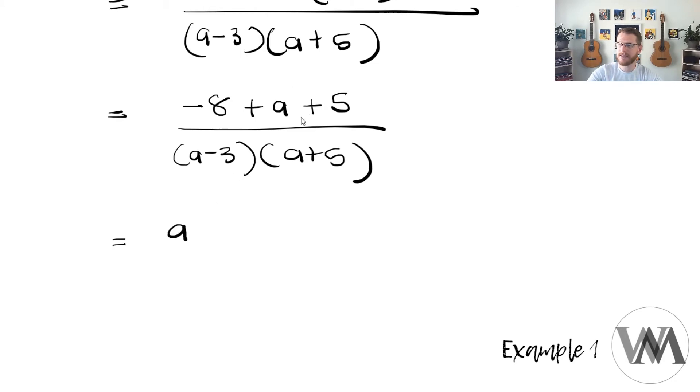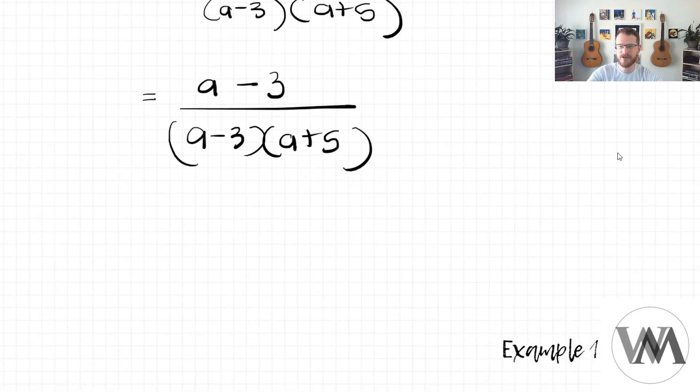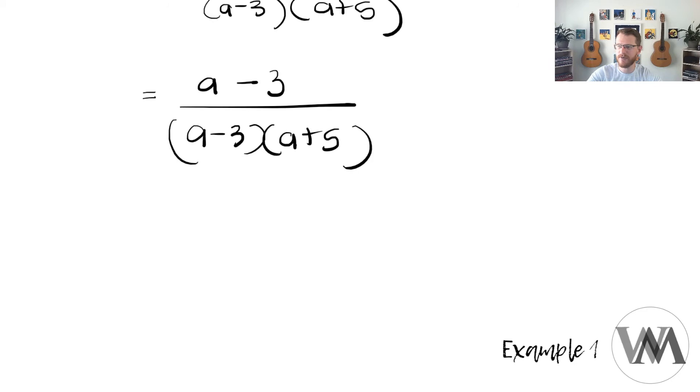I now go ahead and add my like terms. a minus 8 plus 5 will give me -3, a minus 3 over a minus 3, a plus 5. Look at that. a minus 3 and a minus 3 is present both in the numerator and the denominator. What should we do then? We can cancel them out because they are the same. They equal to 1. So what is my final answer? 1 left in the numerator over a plus 5, which is left in my denominator. And there we have our answer.